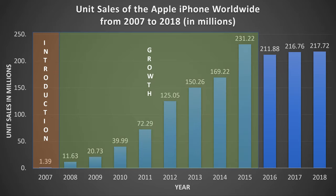Apple's iPhone sales continued to grow for 8 years, from 2008 to 2015, surprisingly having their biggest growth in the final year of this stage of the product life cycle — a staggering increase of 62 million sales on top of 2014's 169 million sales.